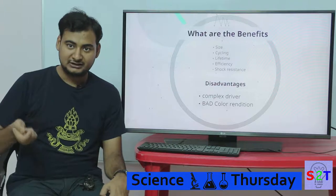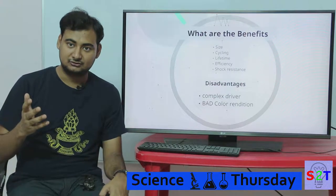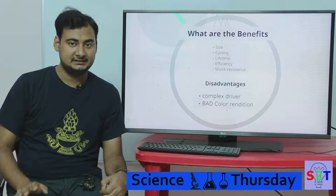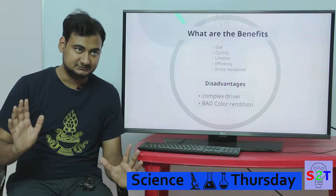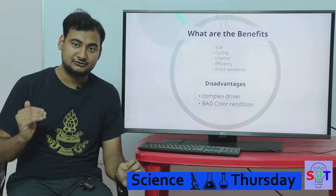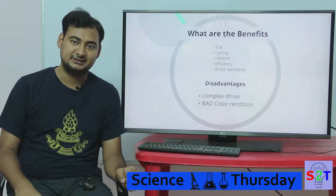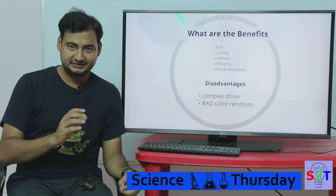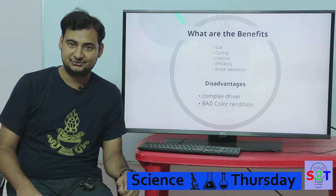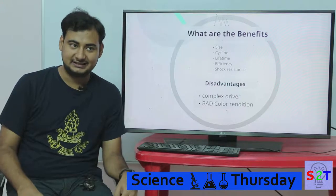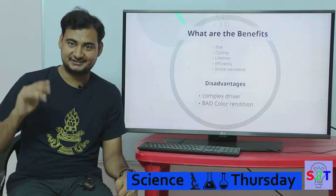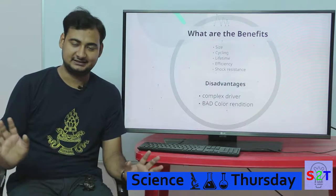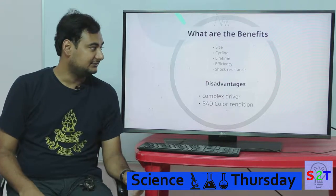If you turn incandescent bulbs on and off frequently, they won't live long. CFLs do a bit better but not by much. LEDs simply don't care — you can flicker them on and off so quickly that there is a technology built on it called Li-Fi, basically an upgraded version of Wi-Fi that works on light in the normal visual spectrum. The light is flickering 50,000 to 60,000 times a second — you can't see the flickering, and the LED simply does not care about cycling.